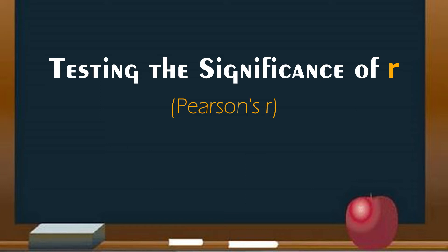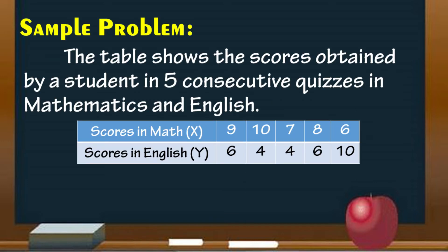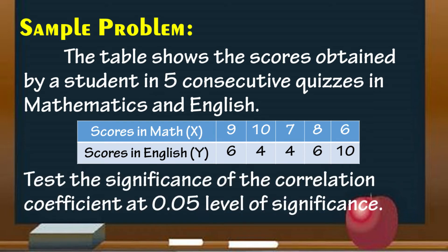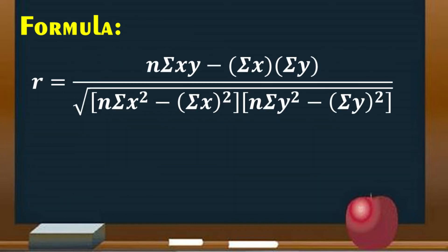If you haven't watched the video yet, you may click the link in the description below. Here is the sample problem. The table shows the scores obtained by a student in five consecutive quizzes in mathematics and English. Test the significance of the correlation coefficient at 0.05 level of significance. First, compute for the value of R using this formula, and the computed value is R is equal to negative 0.65.